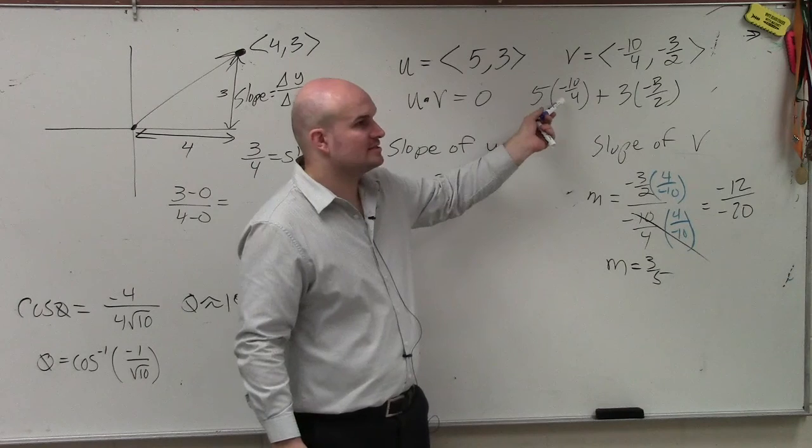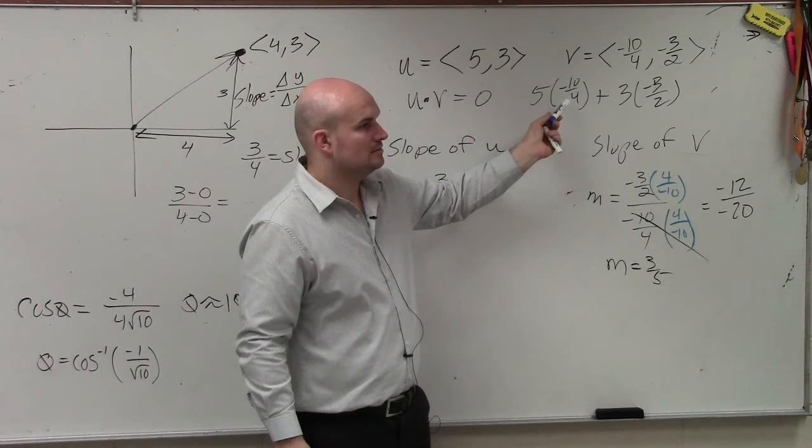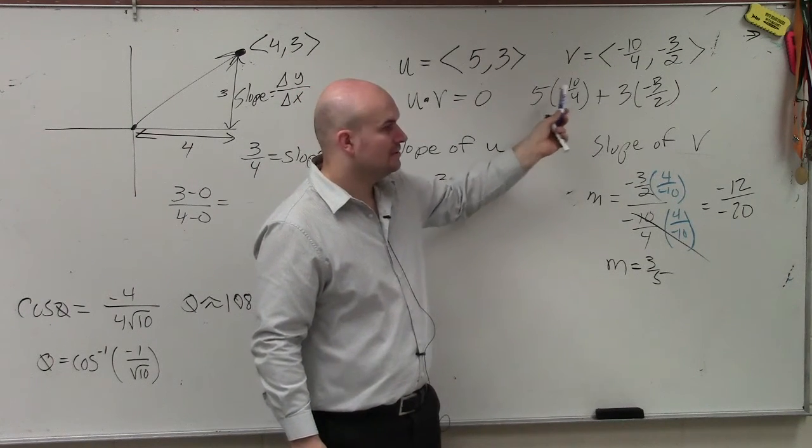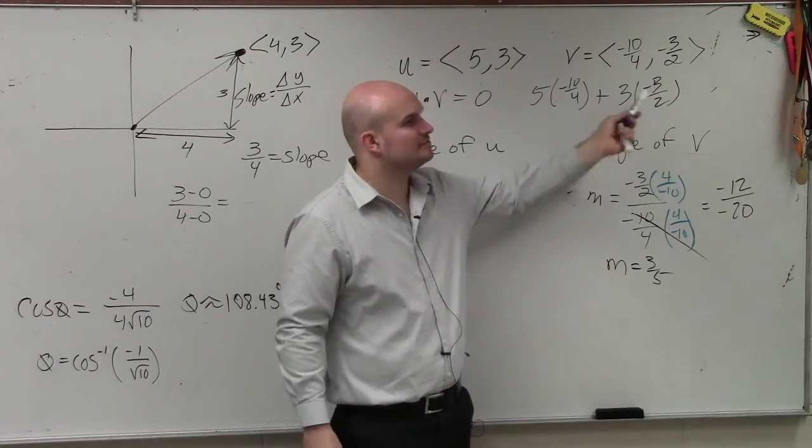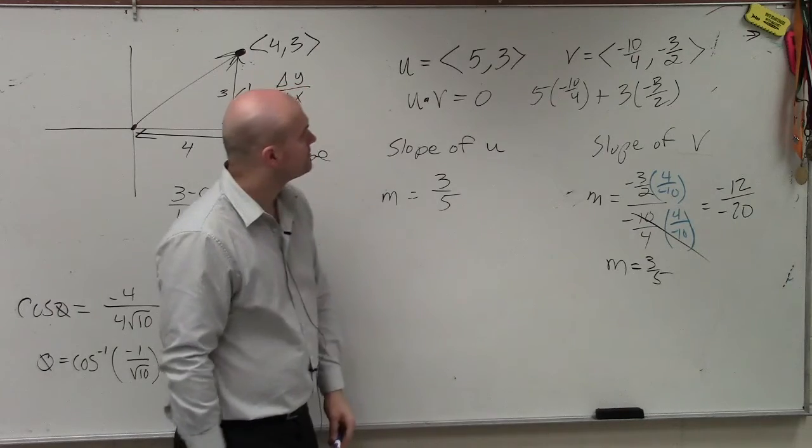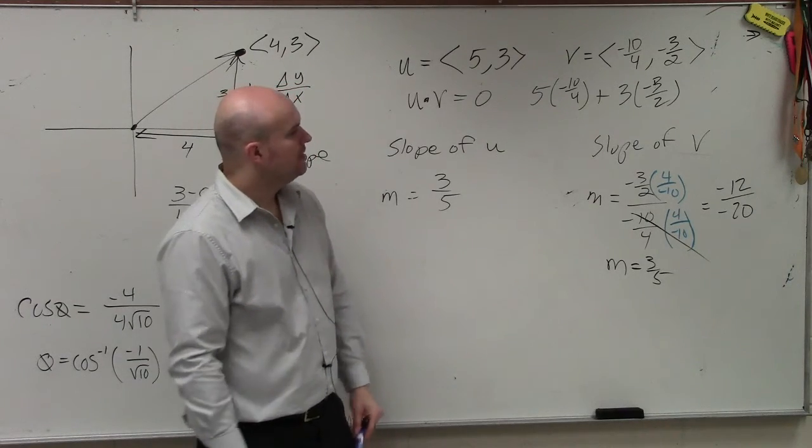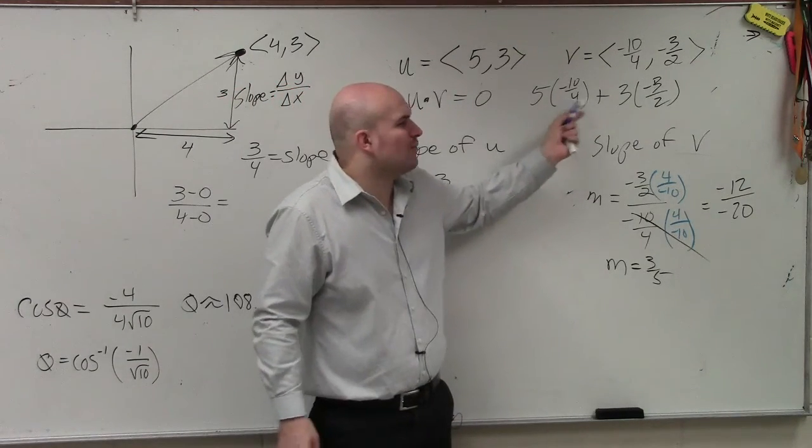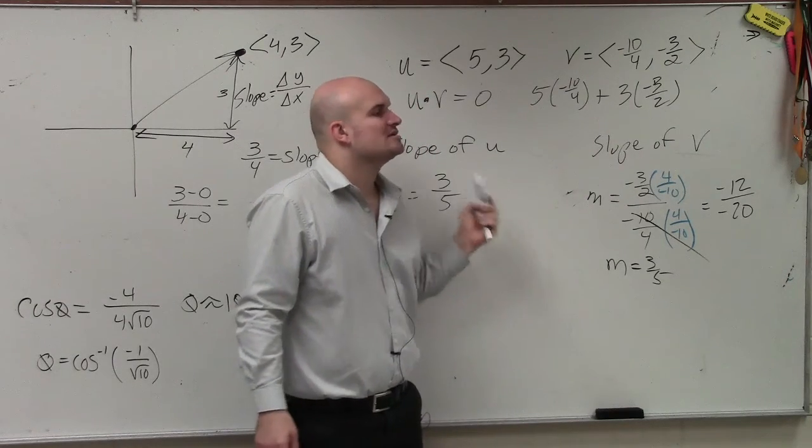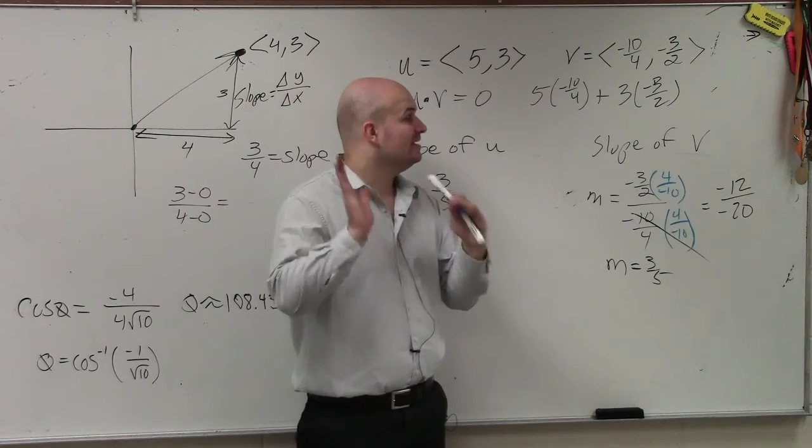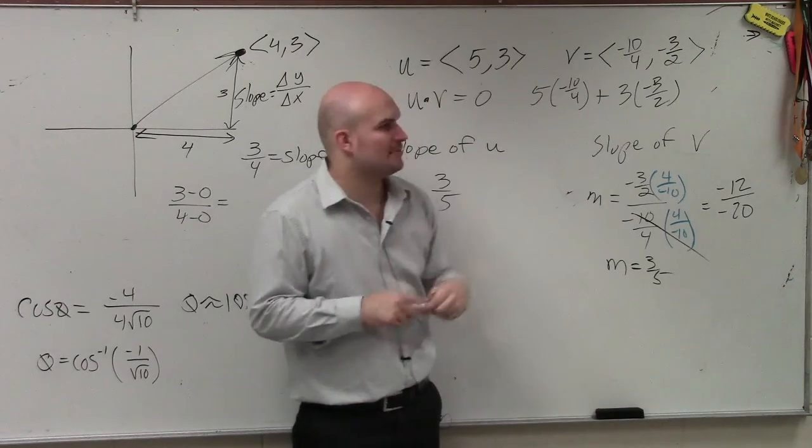This is the dot product. You're adding u1 times v1 plus u2 times v2. But what I'm trying to show you is why do all that work if it's much easier just to do the slopes. So I would check the slopes first to see if the slopes are the same. If they're not the same, then do the dot product.